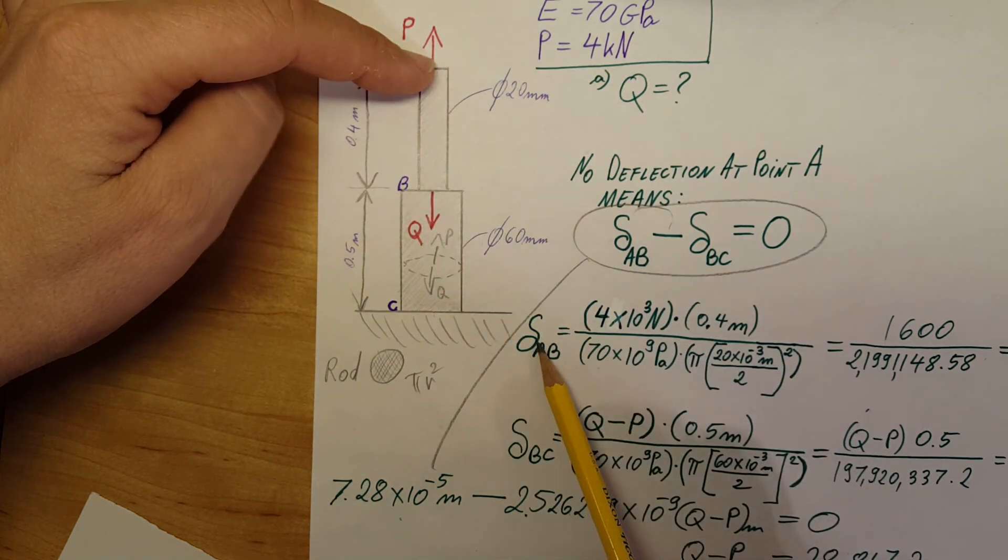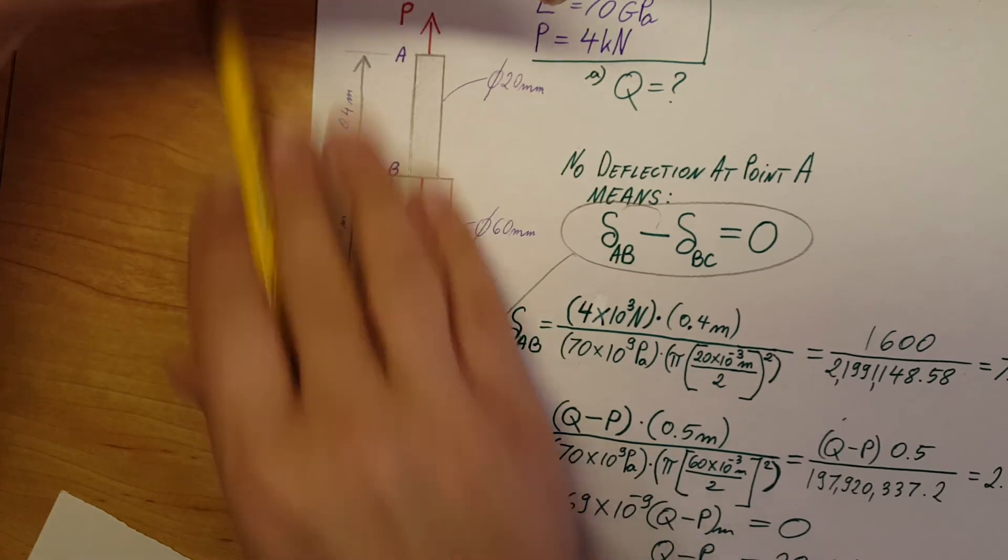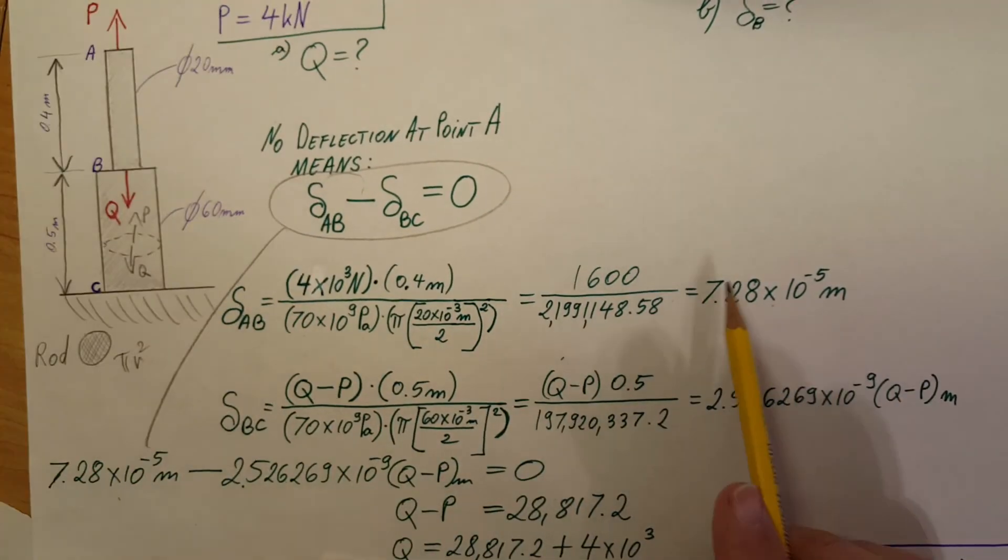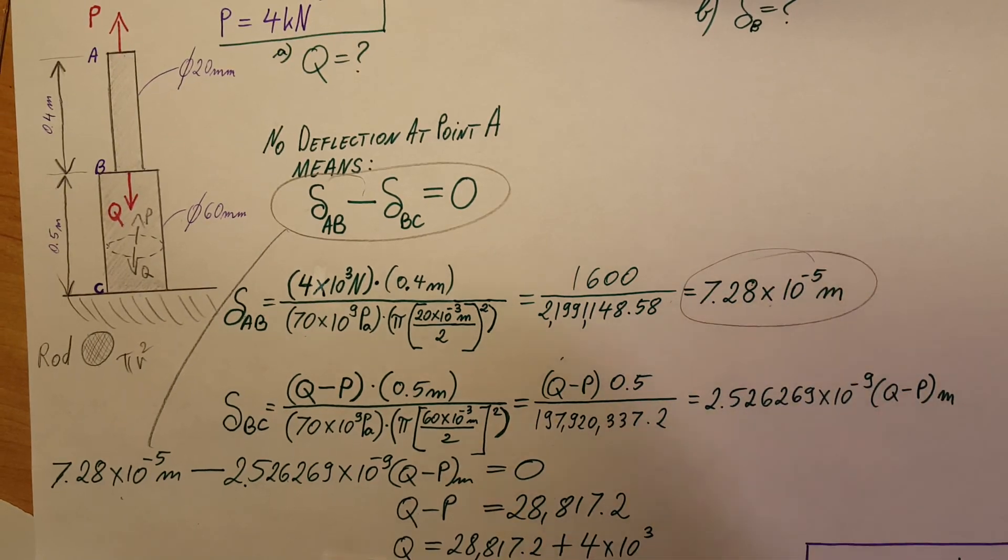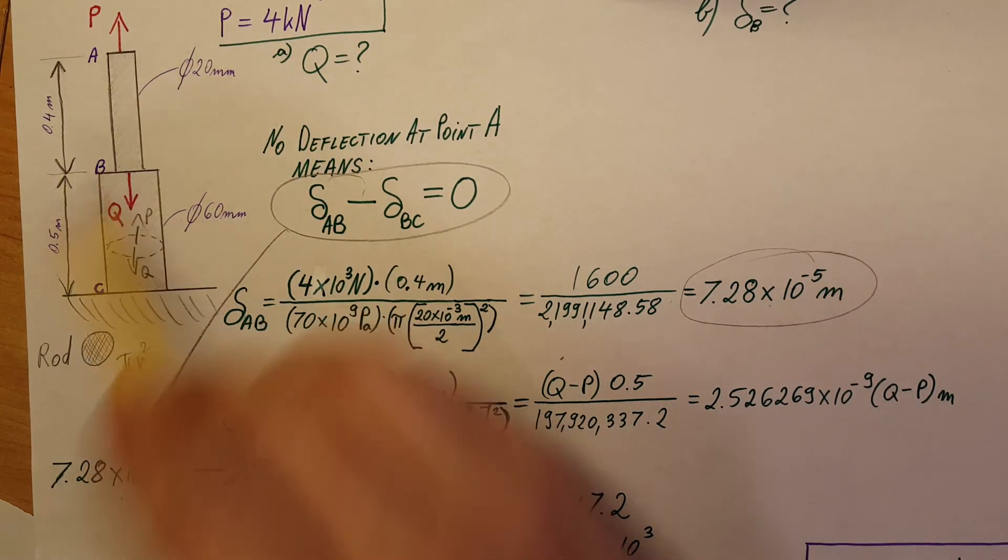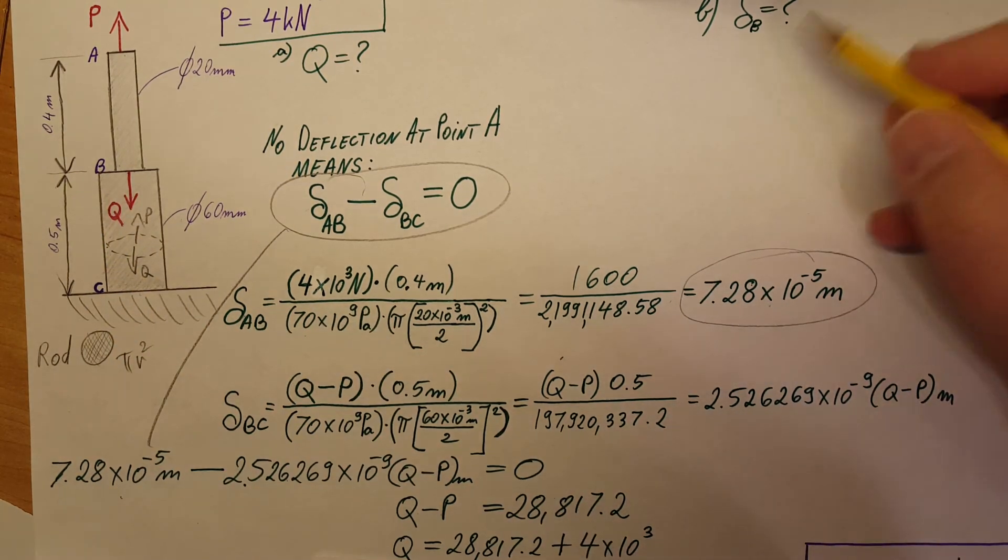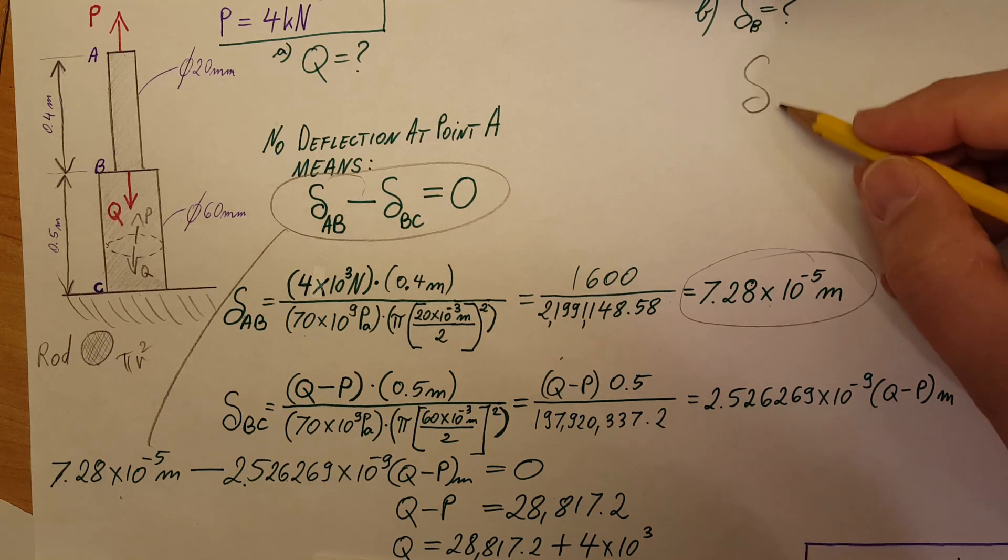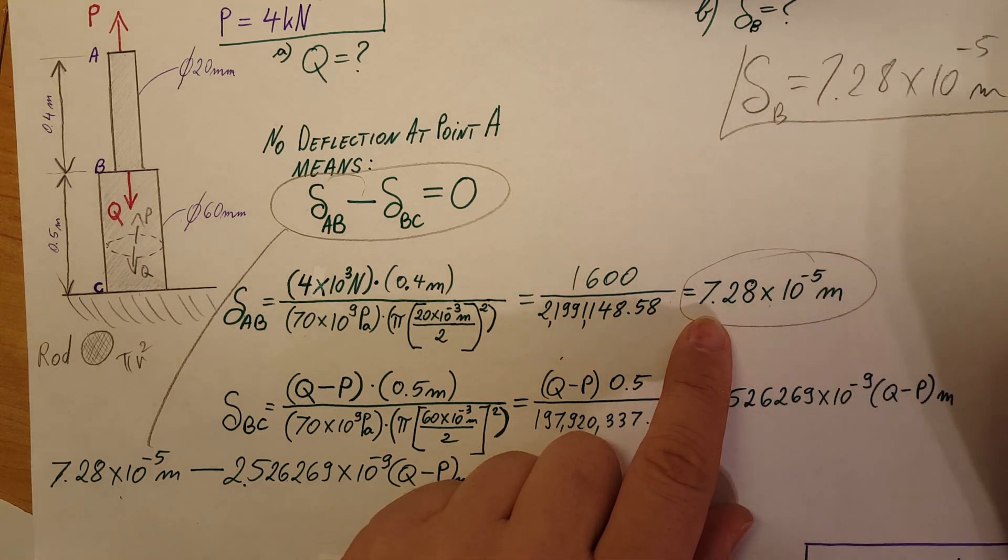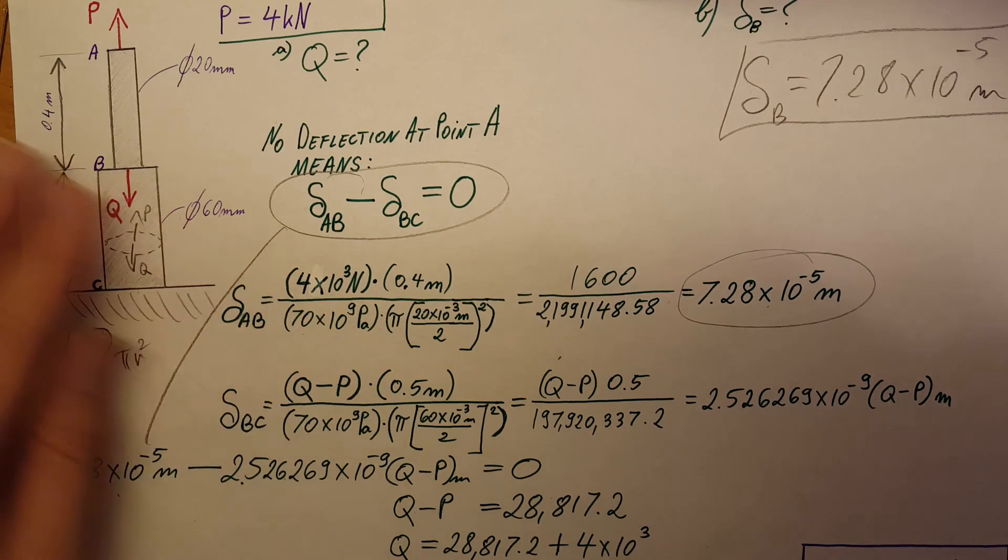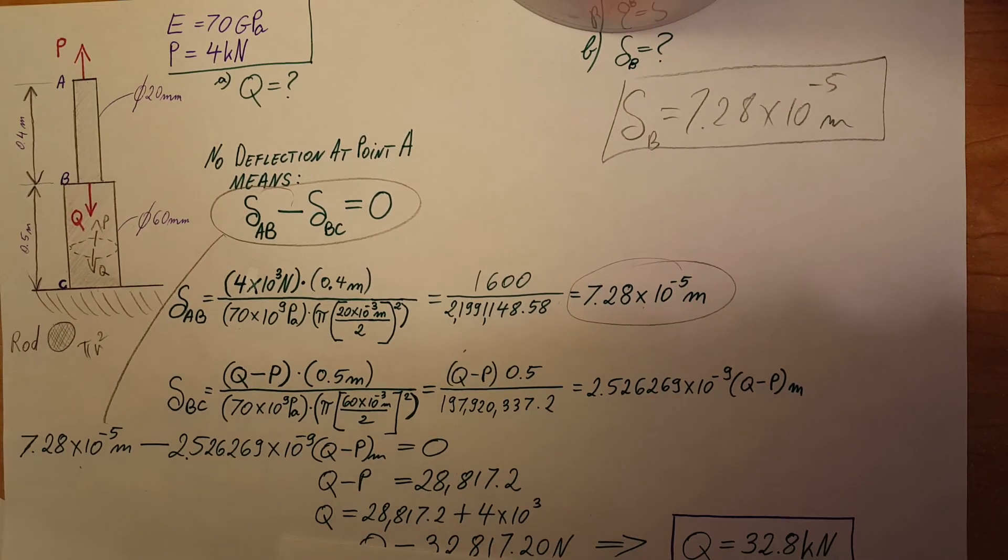Whatever number we found here, which is 7.28 times 10 to the negative 5 meters, this is exactly the deformation that happened at point B. So you can simply write: deformation at B equals 7.28 times 10 to the negative 5 meters.